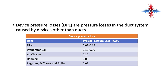Device pressure losses are pressure losses caused by devices other than ducts — for example, an evaporator coil can have a pressure drop of 0.10 to 0.30 inches water column. If you have an evaporator coil at 0.30 and a total external static pressure of 0.5, you only have 0.20 remaining. Adding an air cleaner to that coil at 0.30 could use up your entire 0.5 budget. You may have to make ductwork adjustments and modifications.